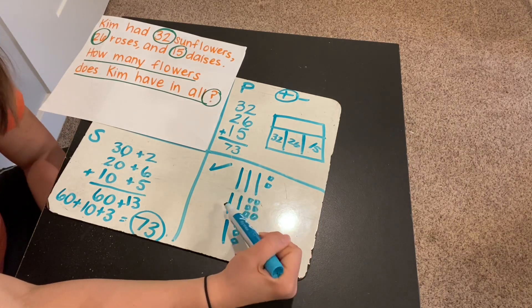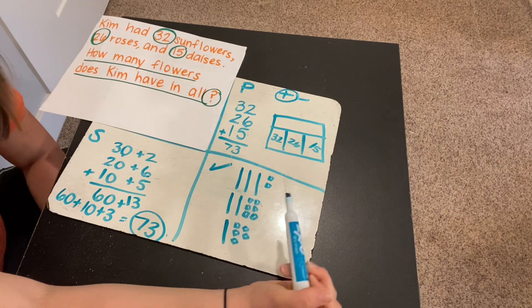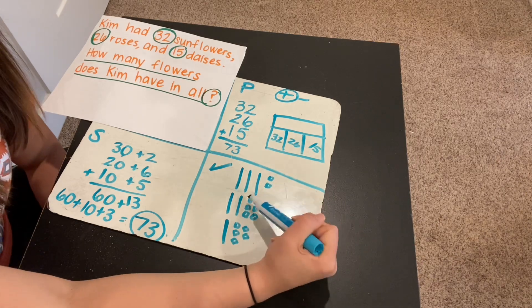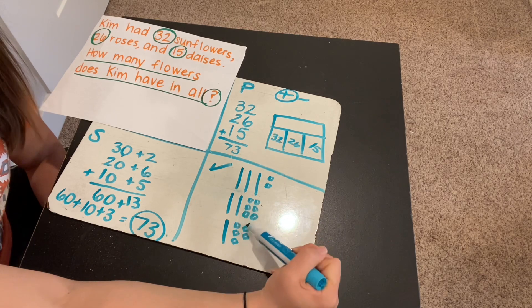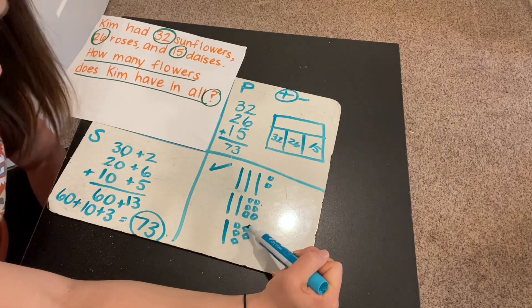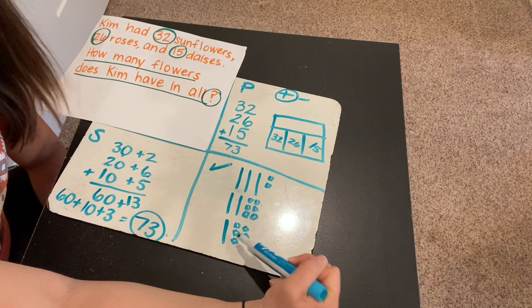10, 20, 30, 40, 50, 60, 61, 62, 63, 64, 65, 66, 67, 68, 69, 70, 71, 72, 73.